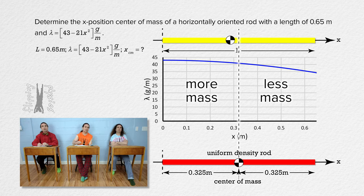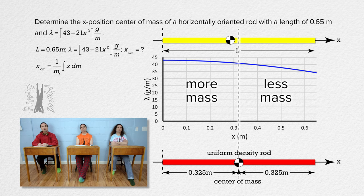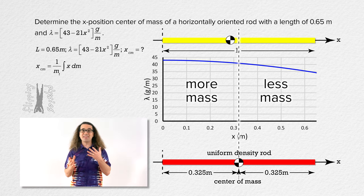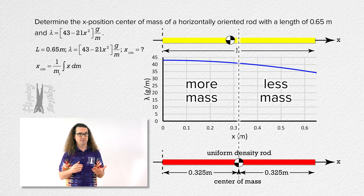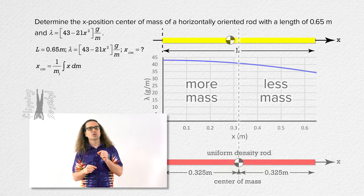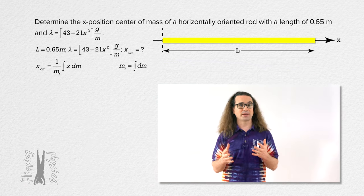Well, when we did the rigid object with shape of uniform density, we used x-position center of mass equals 1 over the total mass of the object times the integral of x-position with respect to mass. Do we use the same equation here? Yes, Bobby, that is the equation we are going to use here. However, rather than starting with that equation directly, we are first going to determine the total mass of the rod because we will need to use that in the x-position center of mass integral equation. In order to find the total mass of the rod, we are also going to use an integral. The total mass of the rod equals the integral with respect to mass.